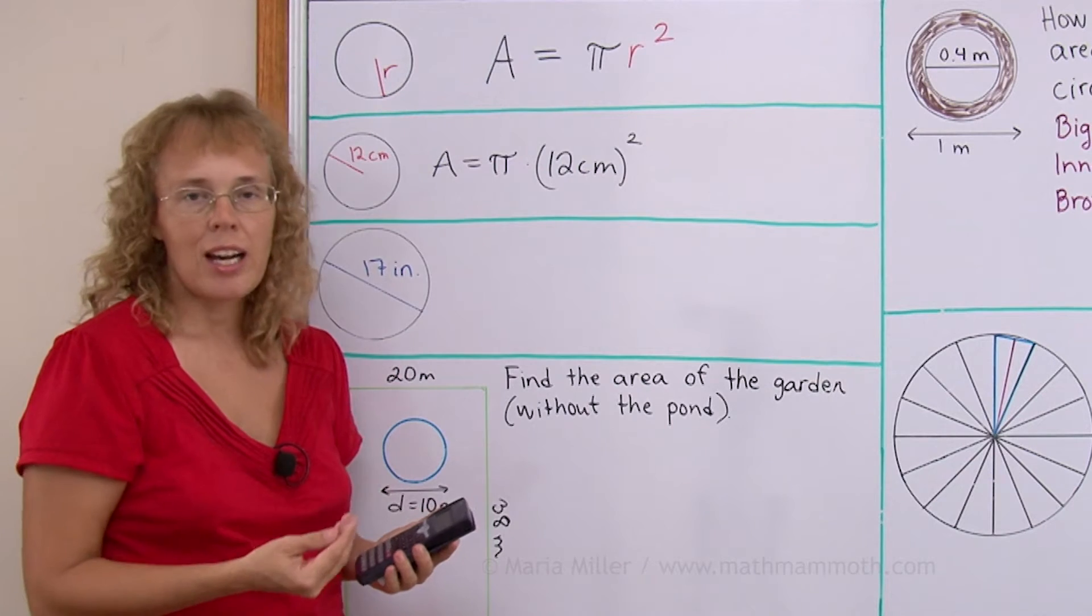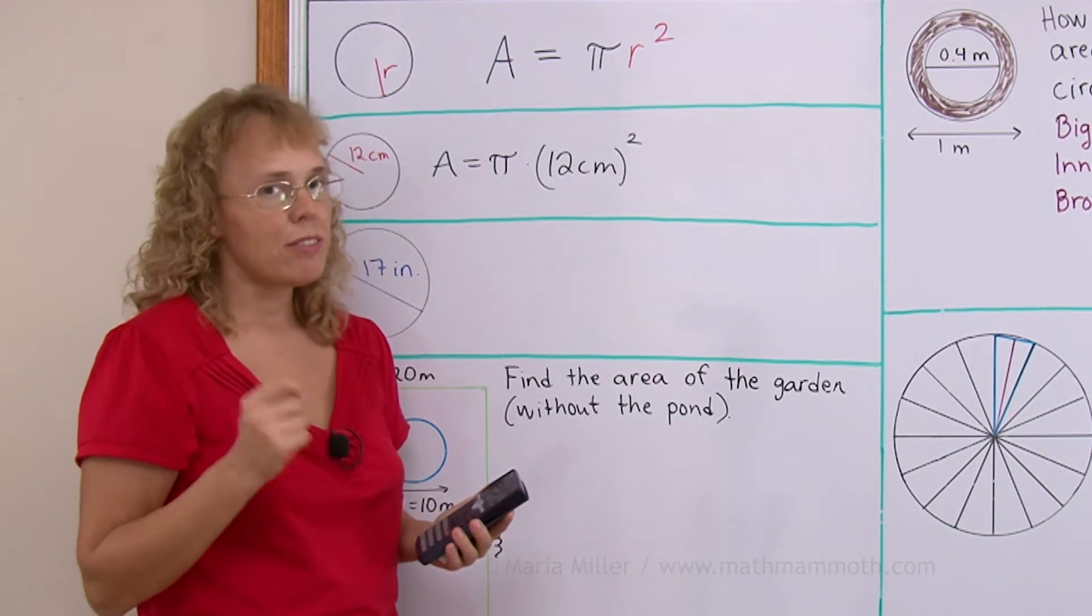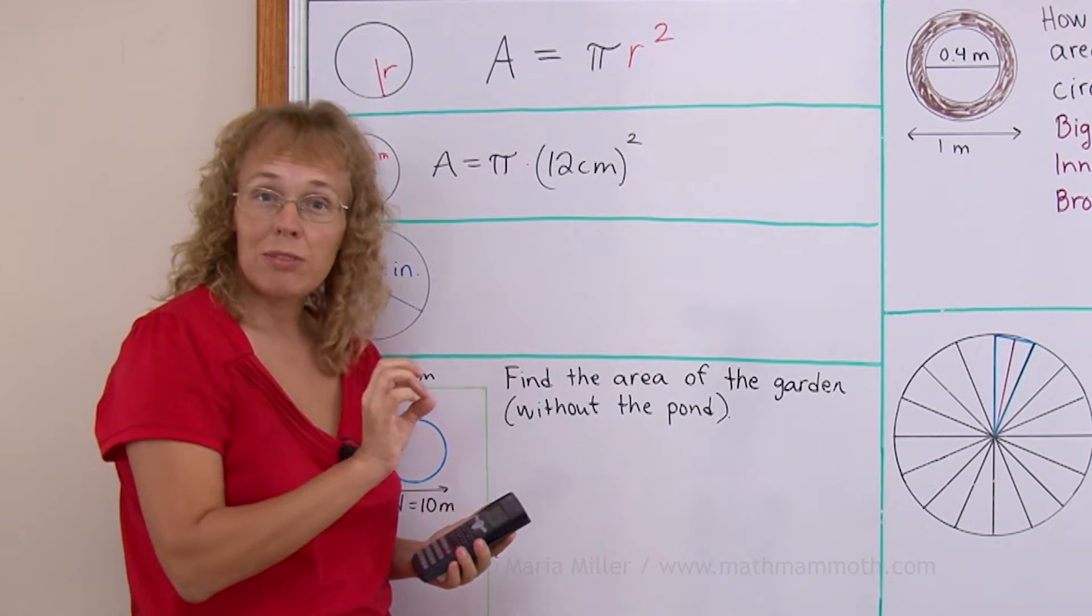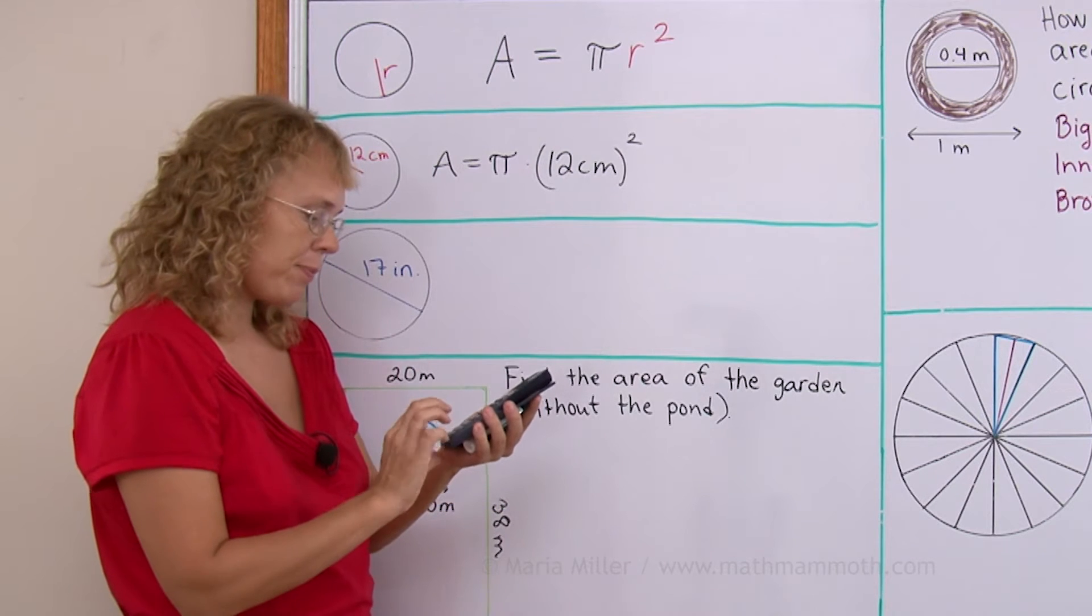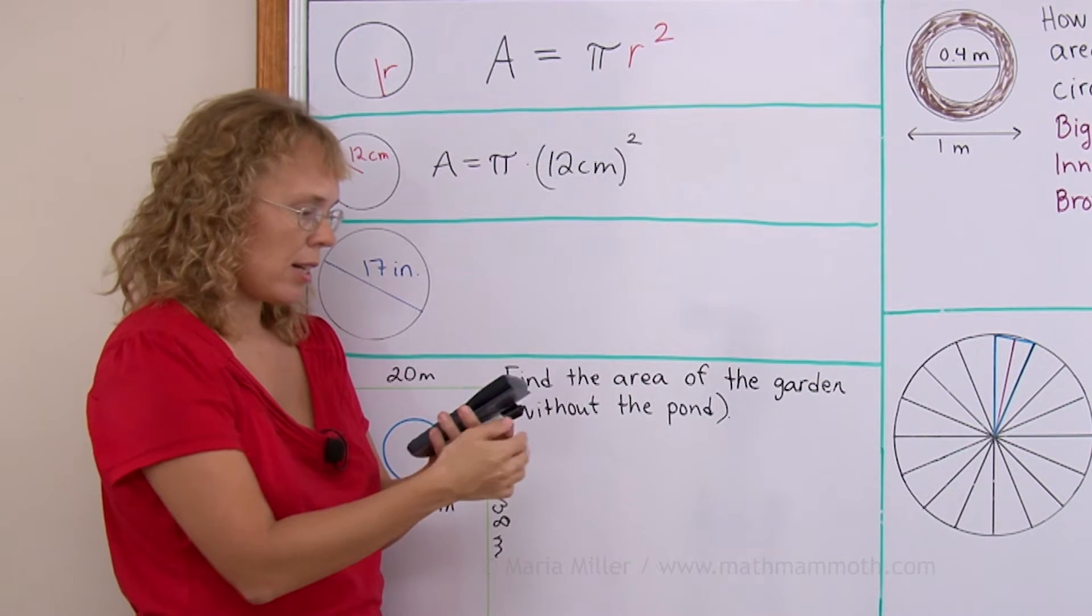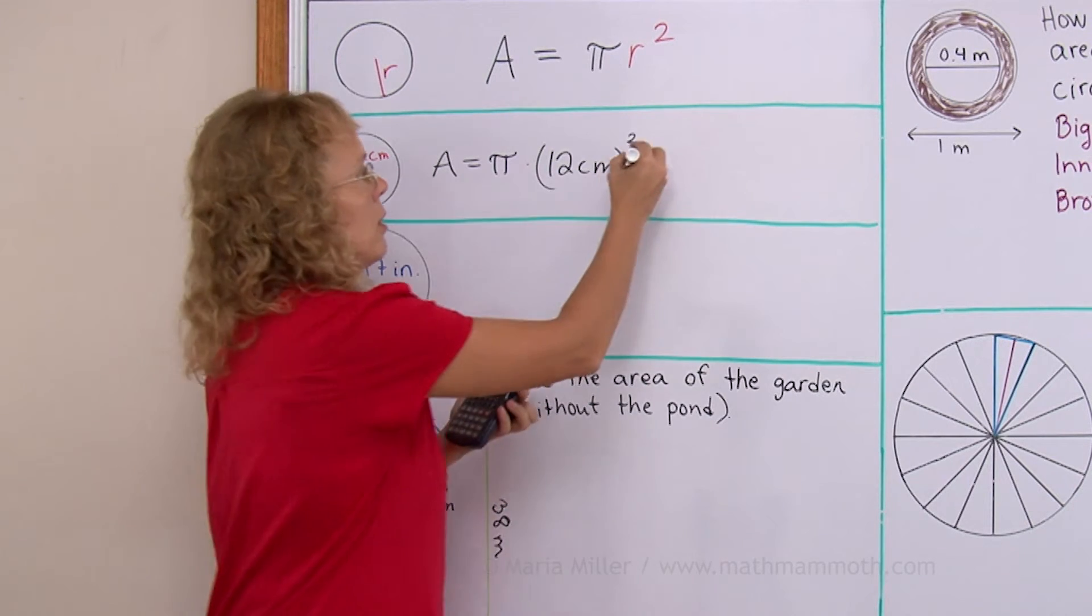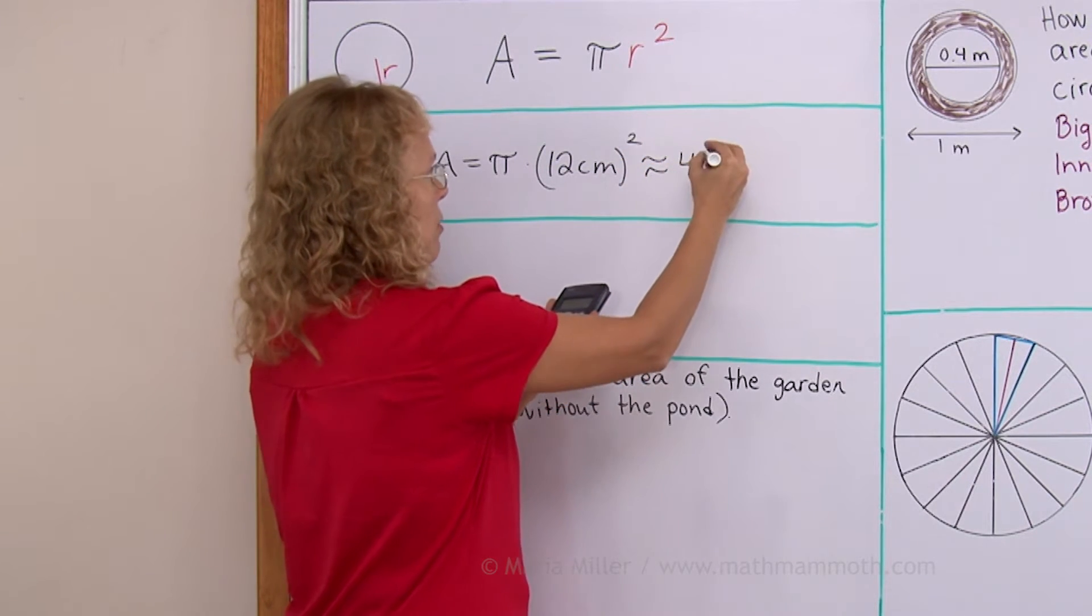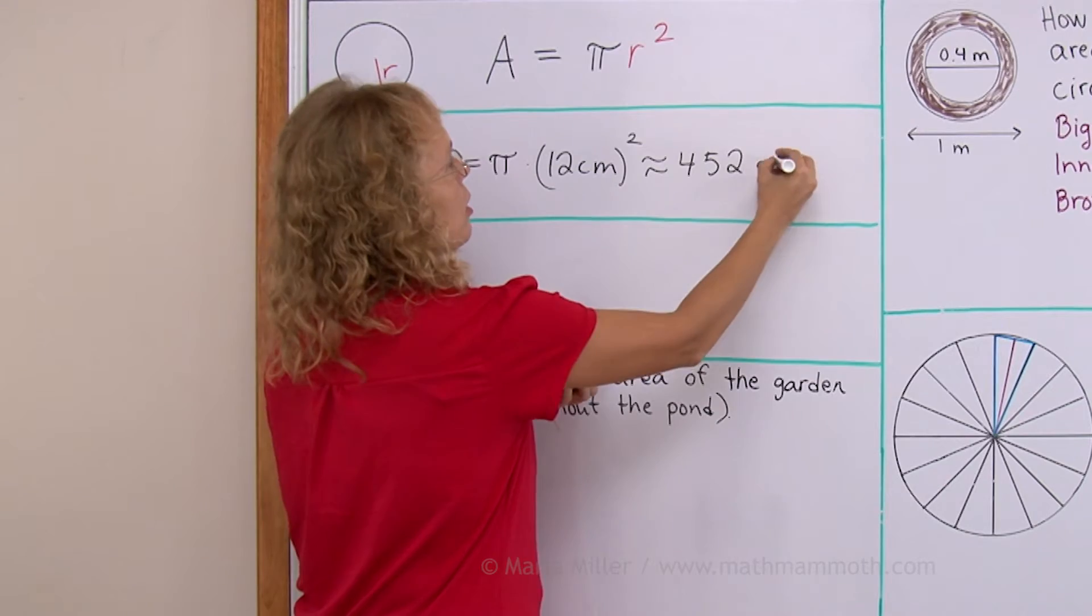So you can calculate 144 times pi. Your calculator may have a button for pi. But if not, you can use 3.14 for pi. So we have 144 times pi equals about 452 square centimeters.